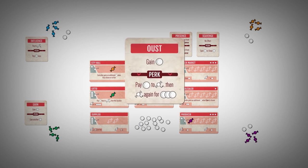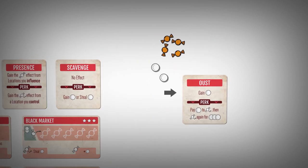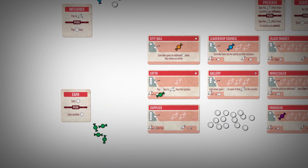The oust action gains each player one mint, similar to Earn. However, the perk for oust is to spend one mint to remove any one influence token from a location. They then can spend an additional three mints to oust another influence token from a location.